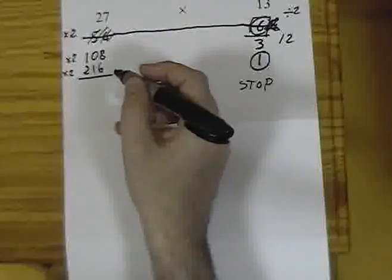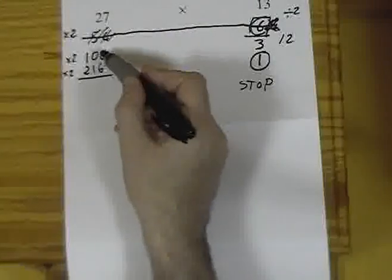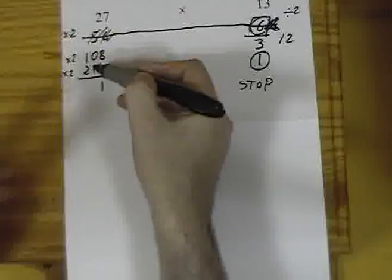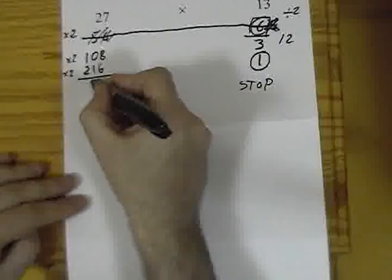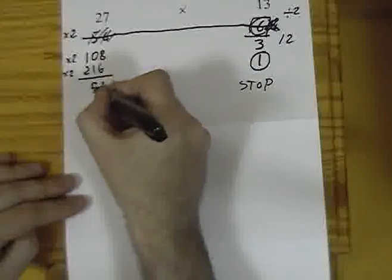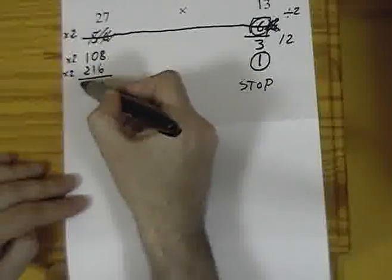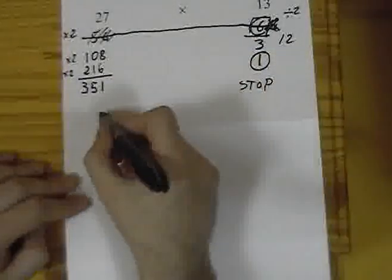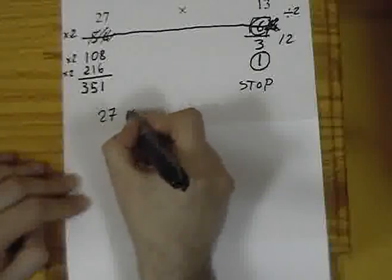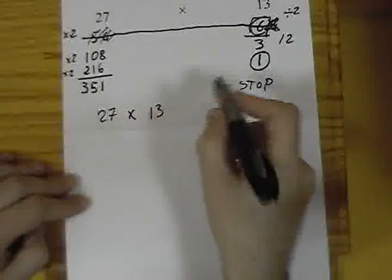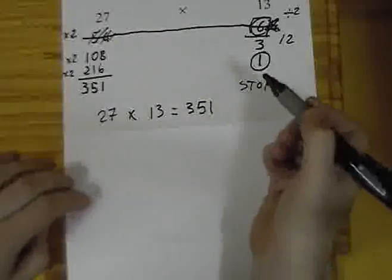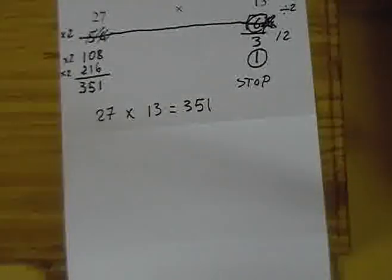Something like 6 plus 8 plus 7 makes 21. 2 and 1 and 2 makes 5. And finally, 2 and 1 means 3. 351. And believe it or not, 27 multiplied by 13 makes 351. I didn't use any multiplication table to make this multiplication.